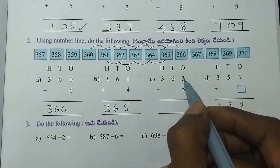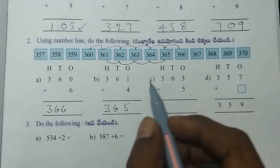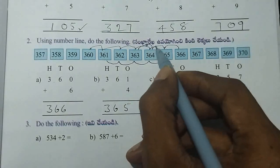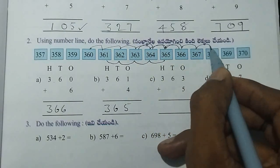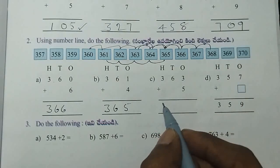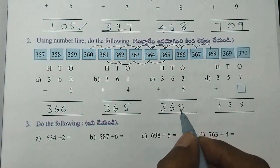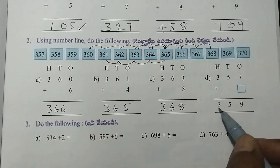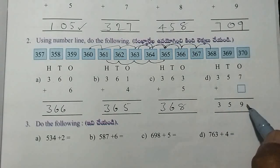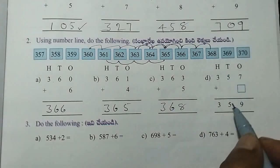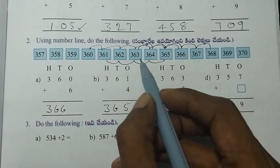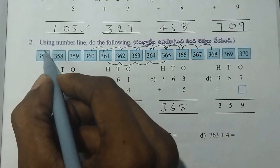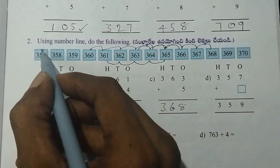Next, you can use it. It is 363. It is 5 numbers. It is 363. It is 5 numbers. 1, 2, 3, 4, 5. It is 368. It is 357. It is 359. It is 359 is equal to 32.